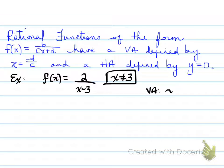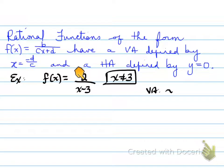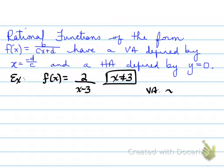For example, when there's a whole number in the numerator divided by some polynomial on the bottom, that whole number can never be 0. Therefore, the horizontal asymptote is y = 0. On the bottom, we have a restriction, x cannot equal 3, and that restriction turns out to be the vertical asymptote. So we have a vertical asymptote at x = 3 and a horizontal asymptote at y = 0, because the numerator can never equal 0.